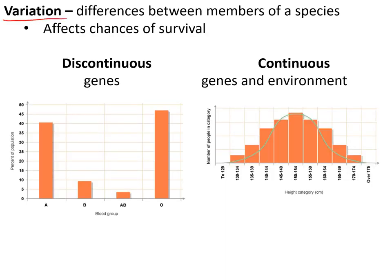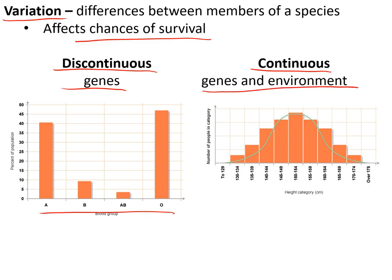Variation is the differences between members of the same species and it affects your chances of survival. It can be discontinuous — for example blood type can be A, B, AB, or O but nothing in between, and is caused only by genes. Or it can be continuous, caused by both genes and environment — for example height, which is affected by both your parents' genes and the diet you're fed as a child.